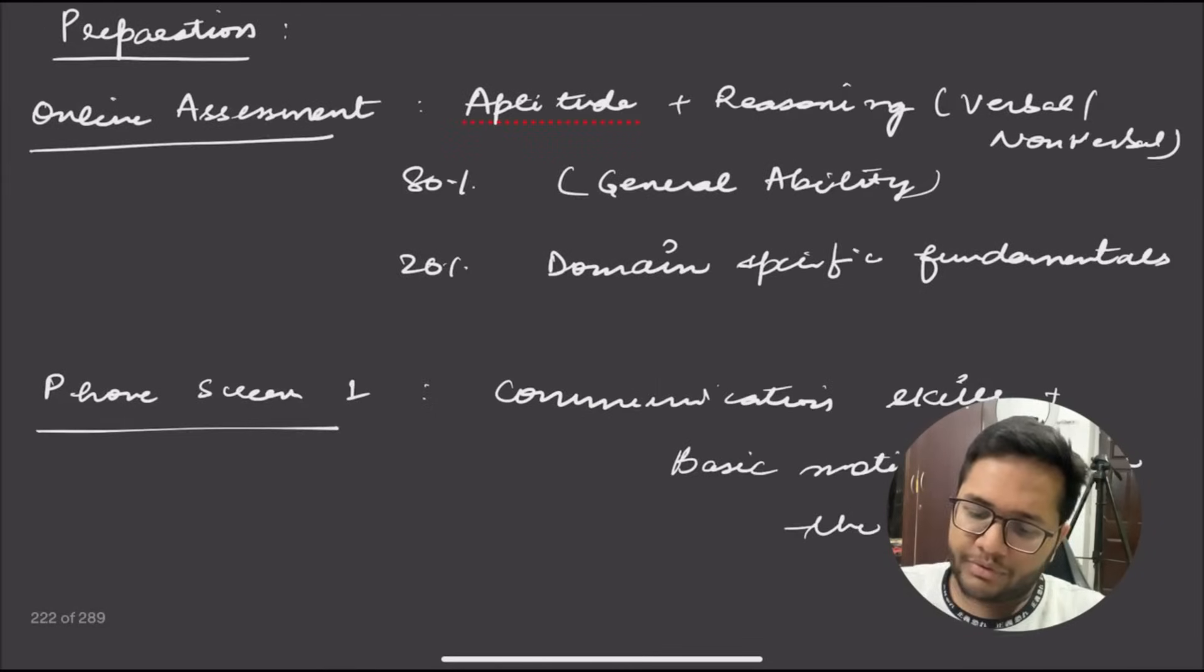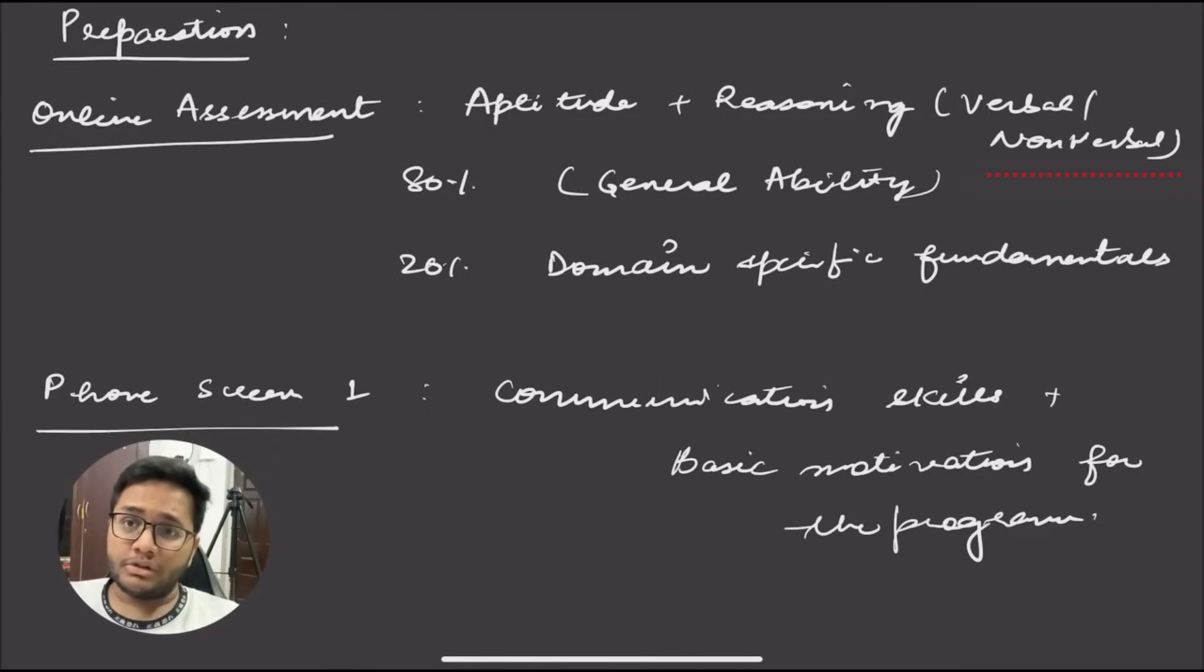How to prepare for online assessment: The syllabus includes aptitude, reasoning, verbal and non-verbal - about 80% general aptitude. 20% might be domain-specific fundamentals. For software application, you might get questions about CS fundamentals like HTTP, networking, or DBMS. For data analytics, basic understanding of Python and SQL with basic queries - if you have basic understanding, you're good to go. It doesn't involve very deep domain questions, mostly aptitude and common sense.